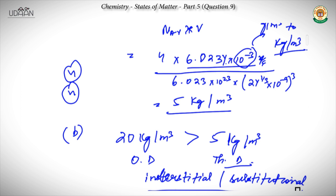In this question, it is important that you remember the rock salt structure. If you remember the structure properly, you can easily calculate the first part. For the second part, you need to see what is the observed density — if it is greater than the calculated density, then you can predict the type of defect occurring.